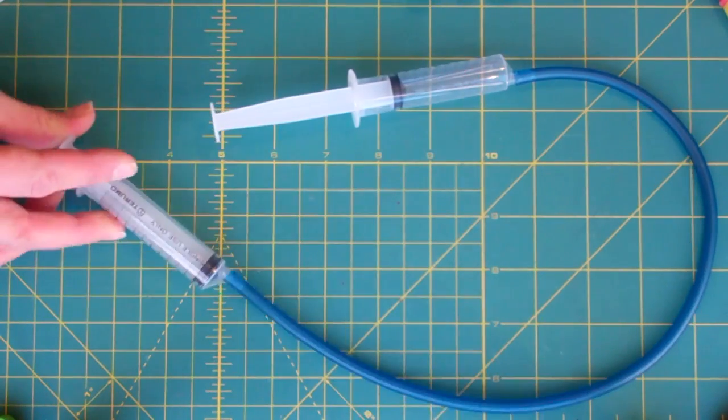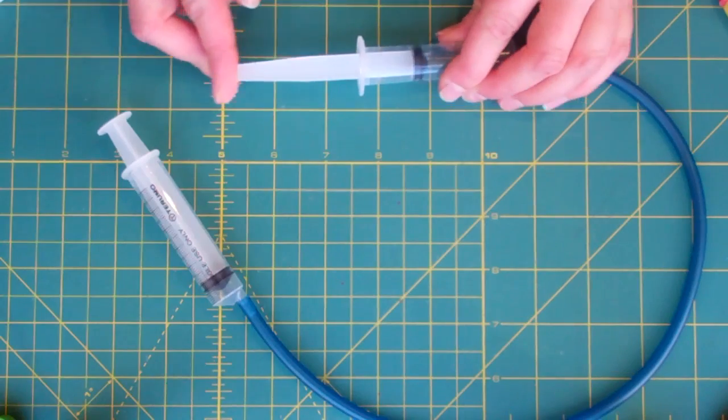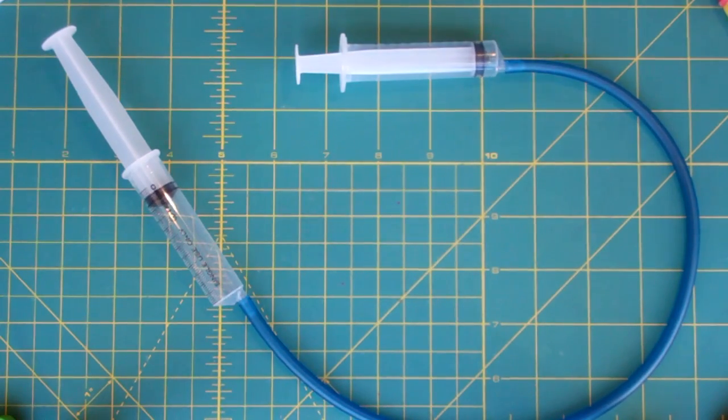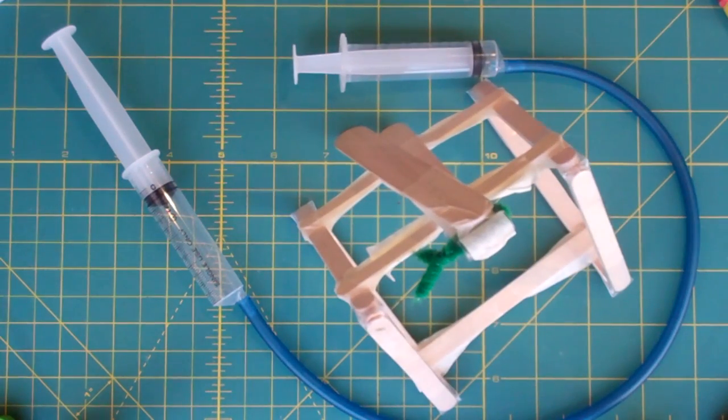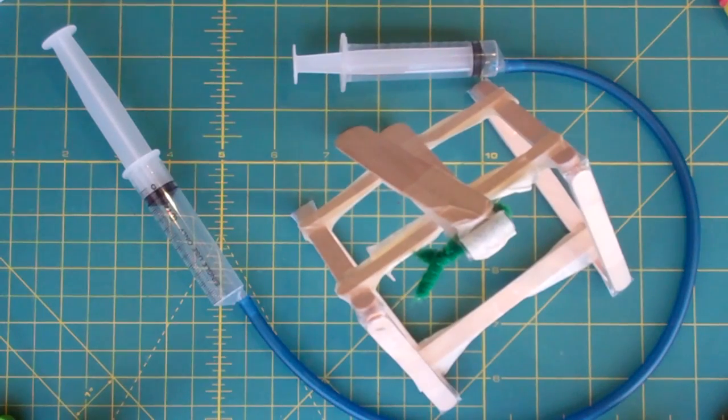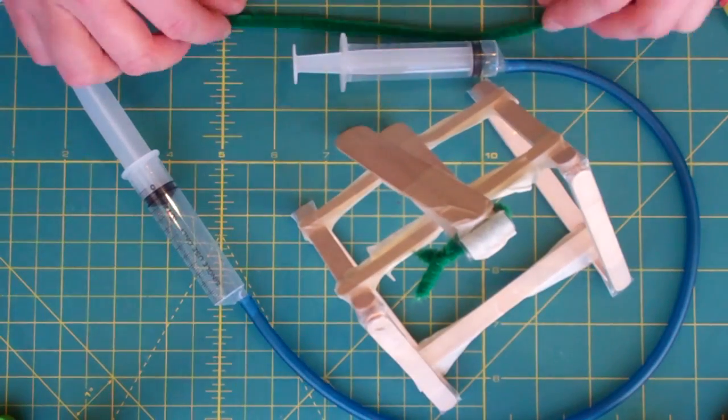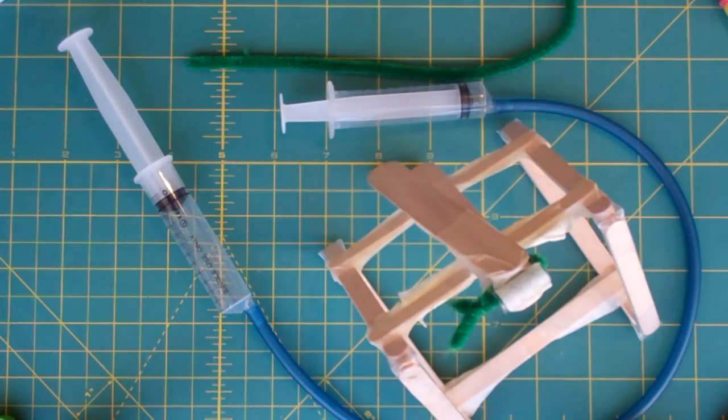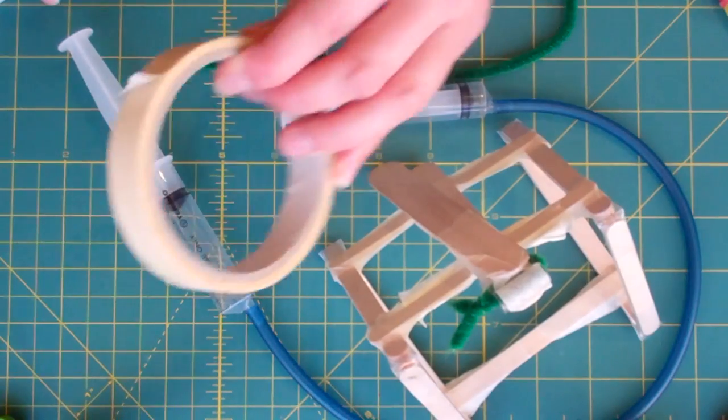So that's our pneumatic system. So first off, create that and make sure it works. The next job is then to attach it to our machine so we can power our machine. For this you'll need your bit of pipe cleaner that you had left over from before and your masking tape.